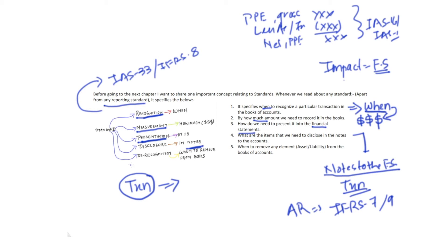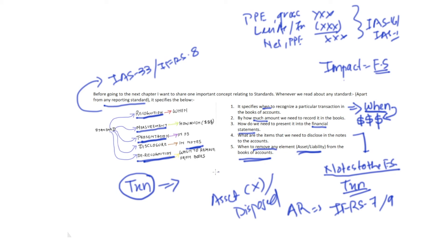The fifth point is de-recognition, which means when do we need to remove any element — assets or liabilities — from the books of accounts. For example, if an asset no longer has any useful life at the end of the accounting period or is disposed of, we need to de-recognize it. Whenever you read any standard, keep all five factors in mind, as the standard will provide guidance on these five elements for a particular transaction.